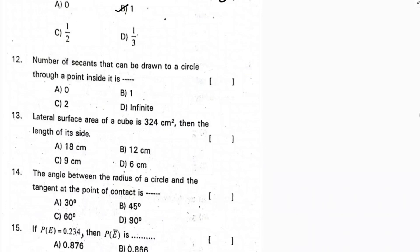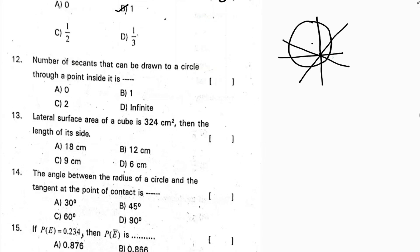Next: how many secants can be drawn to a circle through a point inside the circle? From a point inside, you can draw infinite secants, because a secant is a line that intersects the circle and you can draw infinitely many such lines through an interior point. The answer is infinite.